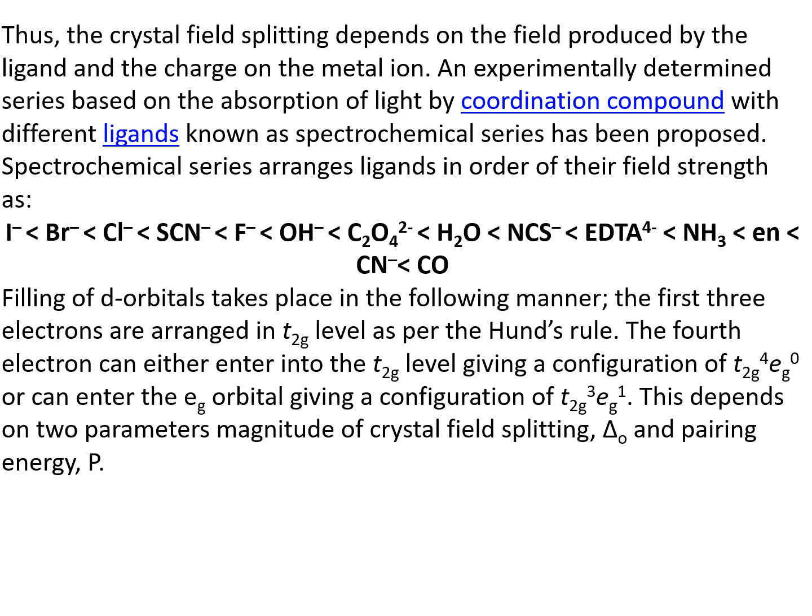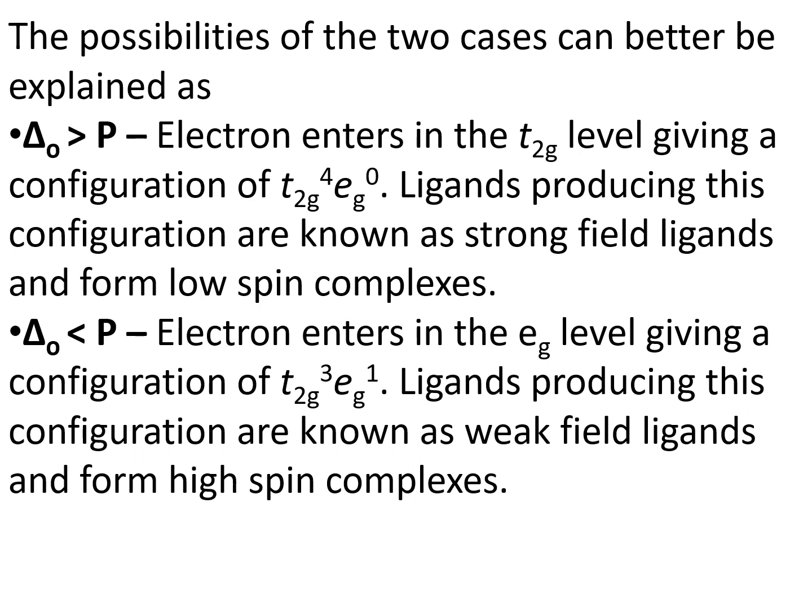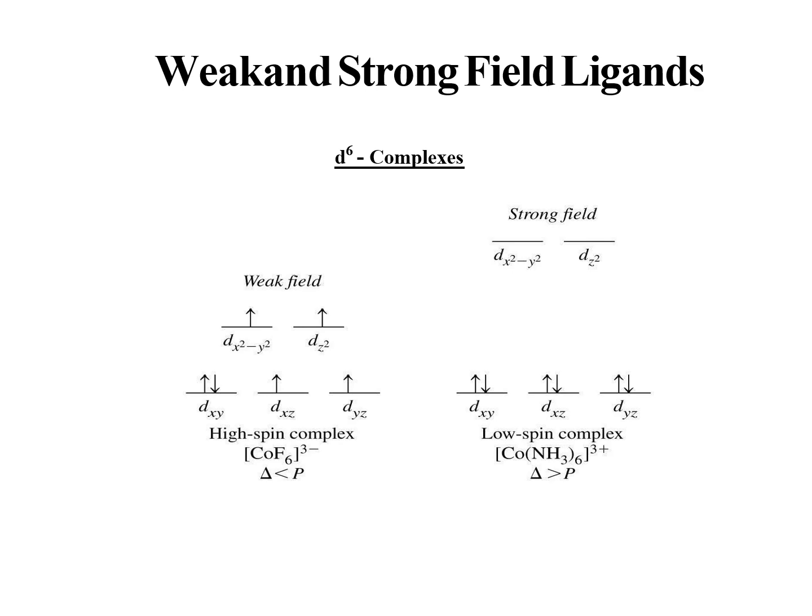The crystal field splitting depends upon the field produced by the ligand and the charge on the metal ions. The spectrochemical series ranks ligands in order of field strength. The d orbital filling takes place as follows: first, 3 electrons are arranged in the T2g level as per Hund's rule. The 4th electron can either enter the T2g level or the Eg orbital depending on two parameters: the magnitude of crystal field splitting (delta O) and the pairing energy (P). If delta O is greater than P, electrons enter the T2g level, and ligands producing this configuration are known as strong field ligands forming a low spin complex. If delta O is less than P, the electron enters the Eg level; these are weak field ligands and form a high spin complex.